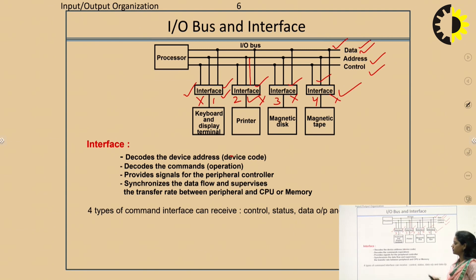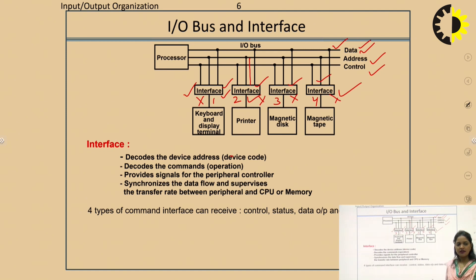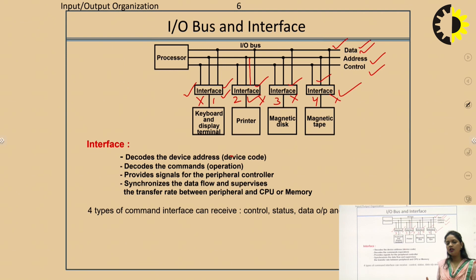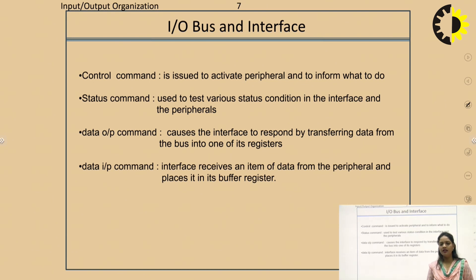This is how the interface acts as a connector between the processor and input-output devices. The interface decodes the device address and also decodes commands, which may include read and write control commands. It provides signals for peripheral controllers and supervises synchronization of data flow — ensuring communication between the processor and input-output devices occurs accurately. It also manages the transfer rate, since CPU speed is higher than that of peripheral devices.